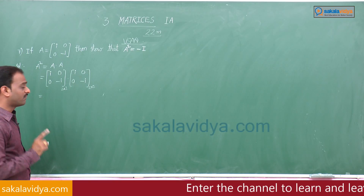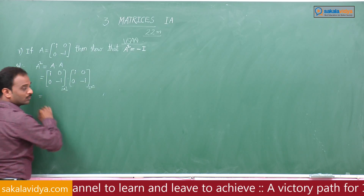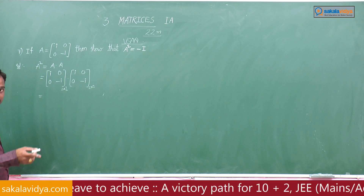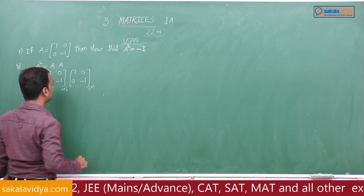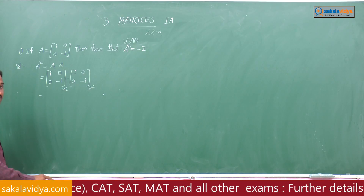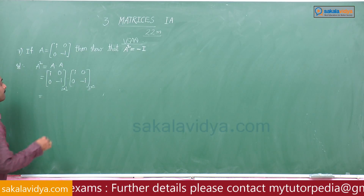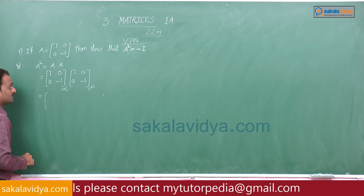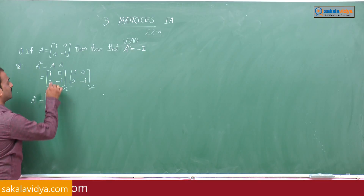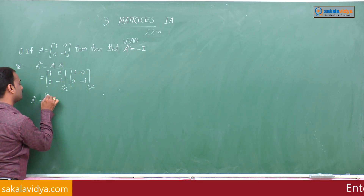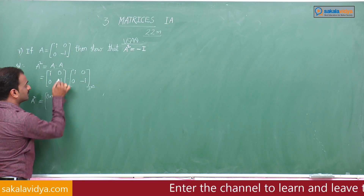The number of columns in the first matrix is 2, which must equal the number of rows in the second matrix, which is also 2. So the product exists. Now the product of these two matrices, A squared, is computed.